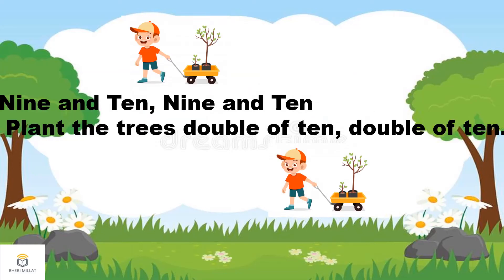Nine and ten, nine and ten — plant the trees double of them, double of ten. The poet is telling us to plant trees double of ten, that is ten plus ten, which equals twenty.